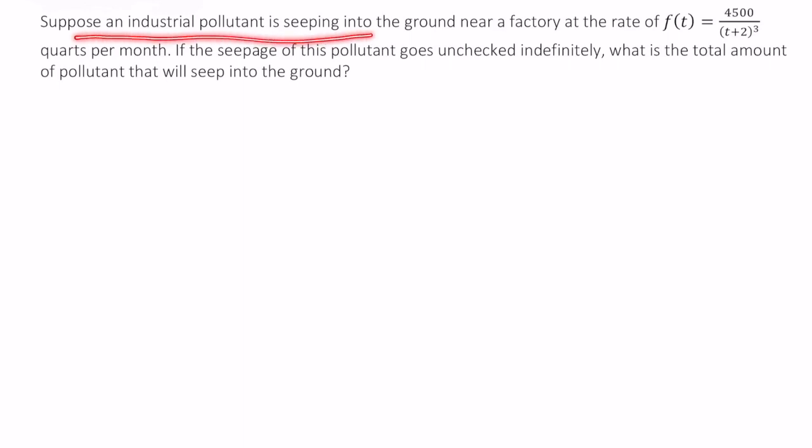Suppose an industrial pollutant is seeping into the ground near a factory, and someone has figured out the rate at which this pollutant is seeping in quarts per month—it's given by this function f(t) = 4500/(t+2)³. If the seepage goes unchecked indefinitely, what is the total amount of pollutant that will seep into the ground?